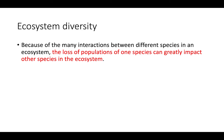Lastly, we have ecosystem diversity. Ecosystem diversity results because of the many different interactions between species in a particular ecosystem. Because species in an ecosystem are so interdependent on one another, the loss of a population of one species has the potential to greatly impact other species in the ecosystem, as they are so interdependent and intertwined.